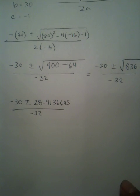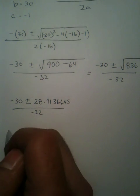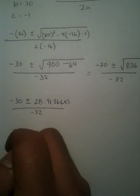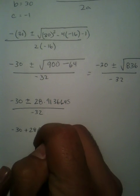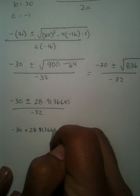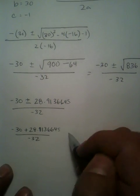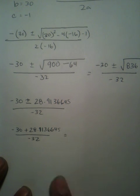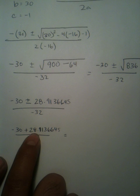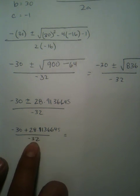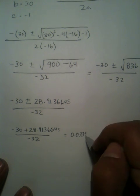Now, to actually find the answer to this question, you're going to break this into two parts. One of these being negative 30 plus 28.9136645 all over negative 32. In your calculator, you're going to take negative 30 and then add 28.912 and you're going to get this number, 0.0339.